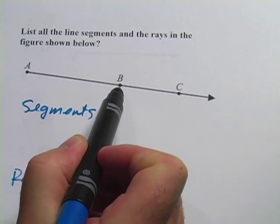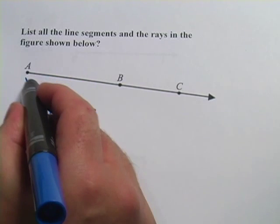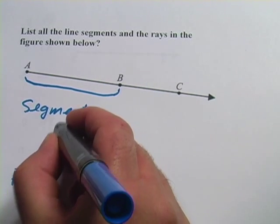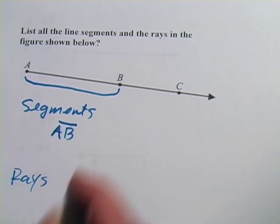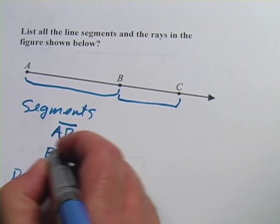Well, the segments are going to be any chunk here that has two endpoints. So there's a segment here from A to B. And we would write that as segment AB like that with a line on top. And then there's a segment from B to C. So we would write that one.